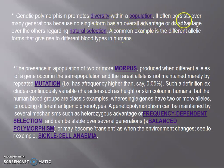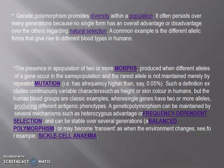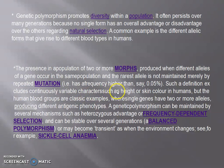Some forms have advantages or disadvantages over others regarding natural selection. A common example is different allelic forms that give rise to different blood types in human beings. The presence in a population of two or more morphs is produced when different alleles of a gene occur in the same population, and the rarest allele is not maintained merely by repeated mutation. This definition excludes continuously variable characters such as height or skin color in humans.